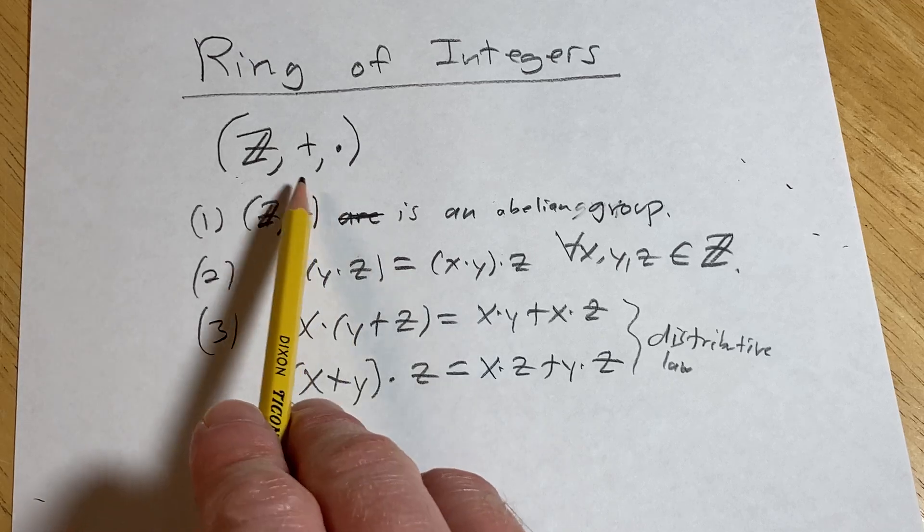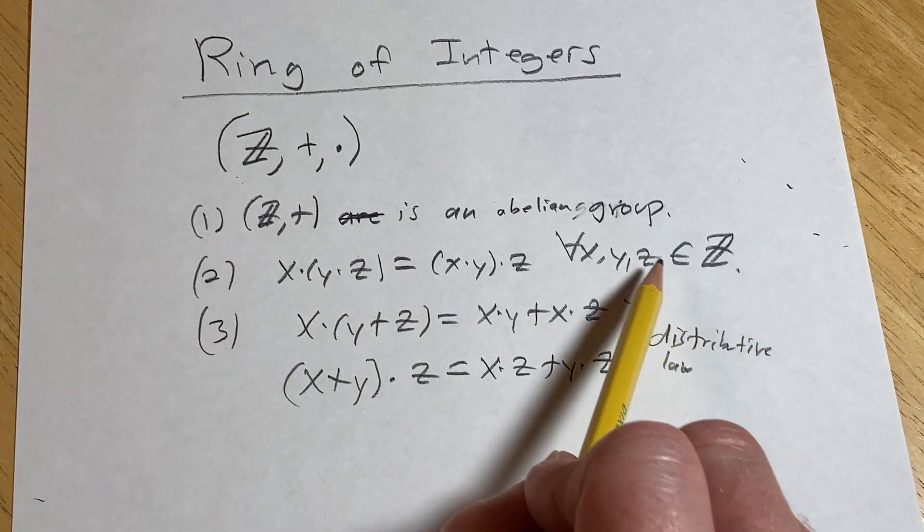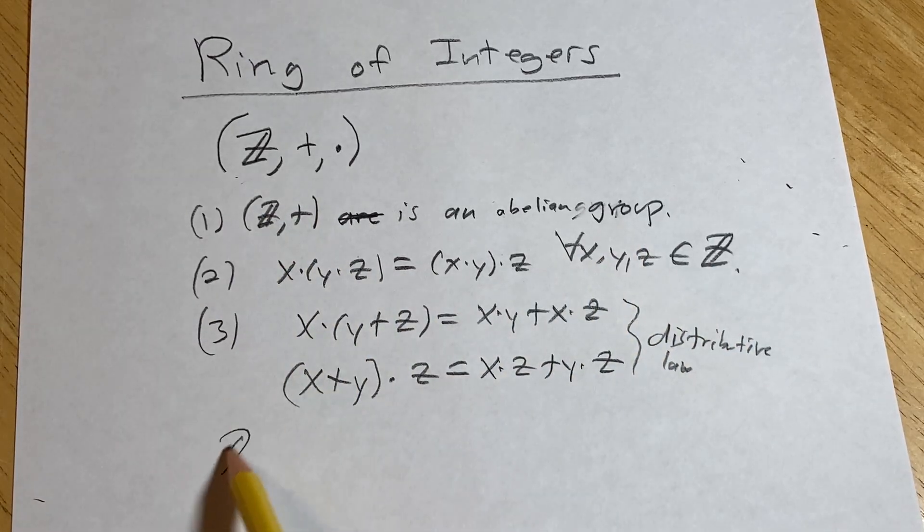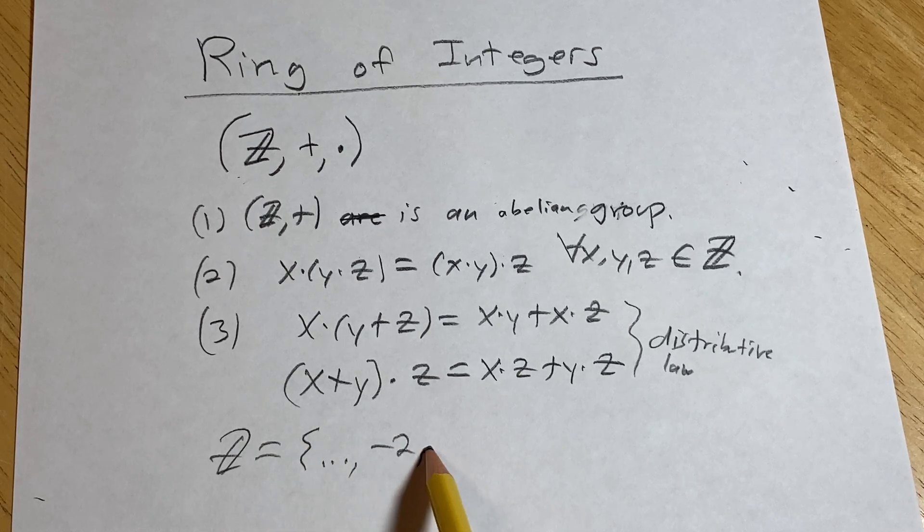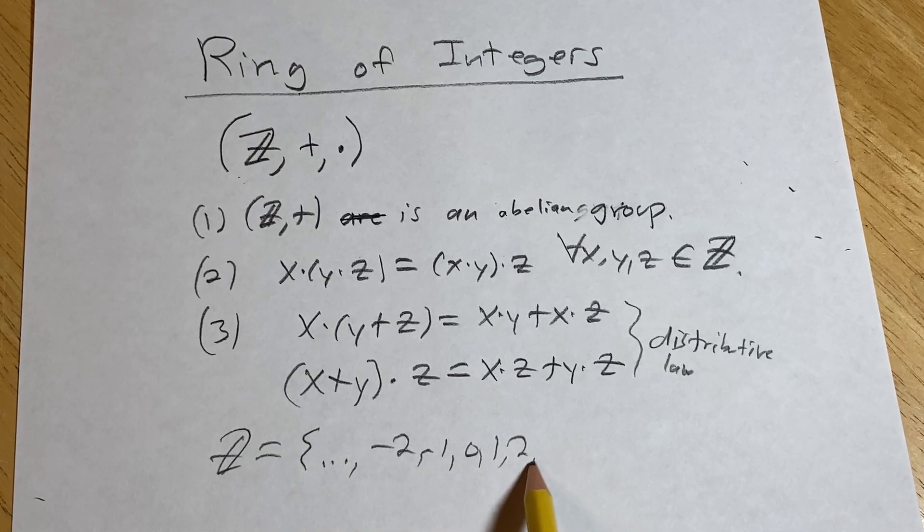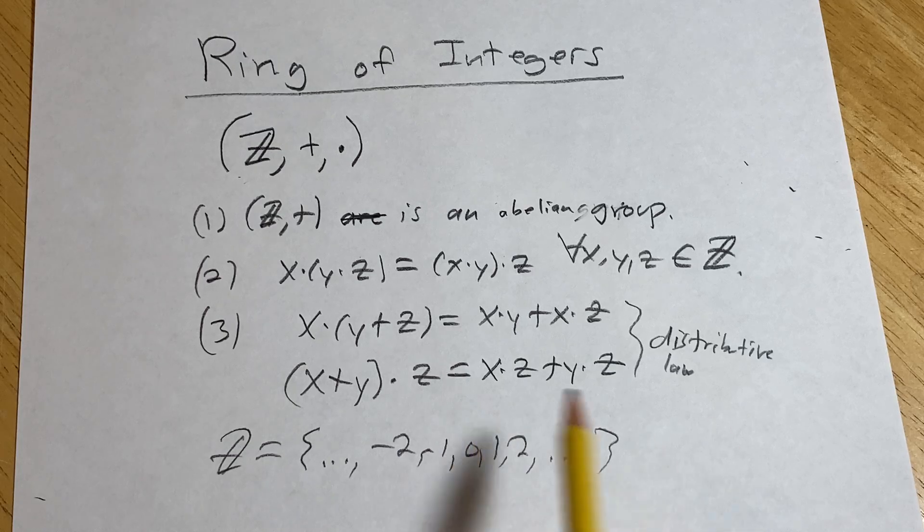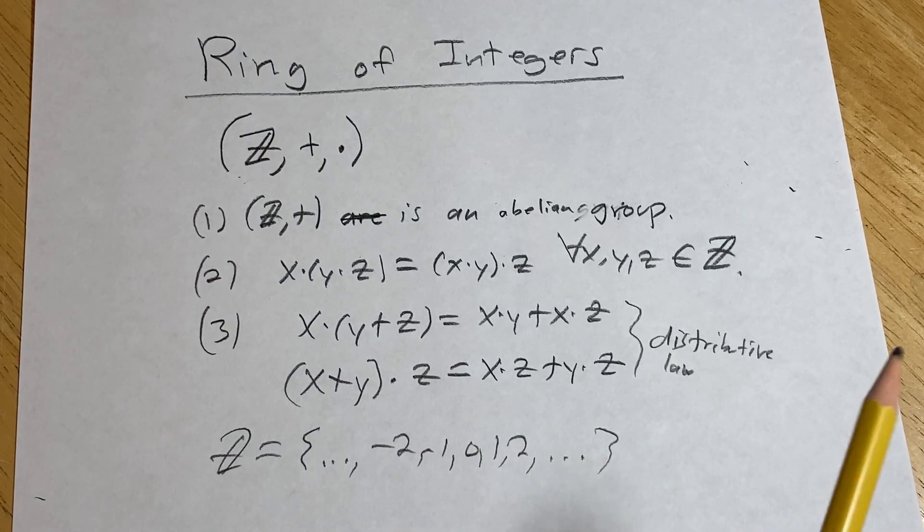So this is certainly a ring. It's the integers, right? Just to make sure it's clear: dot dot dot, negative two, negative one, zero, one, two, dot dot dot, you know, four, fifteen, all the whole numbers, positive, negative, zero.